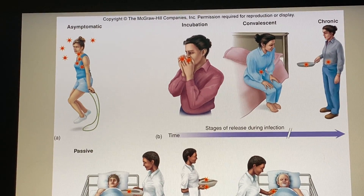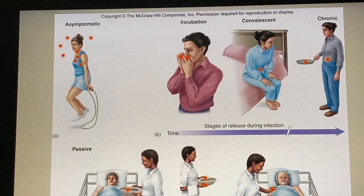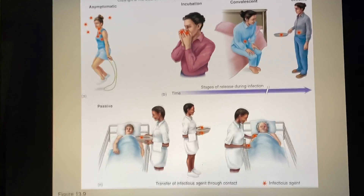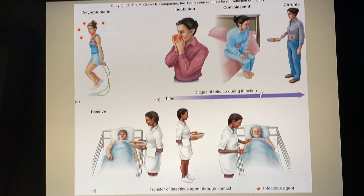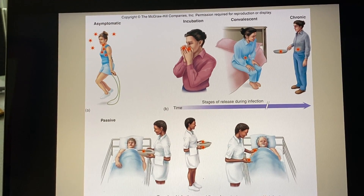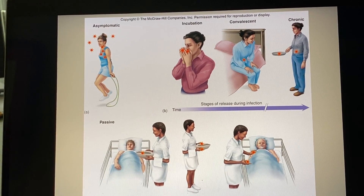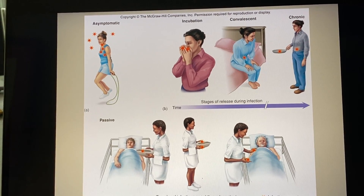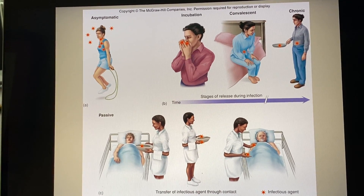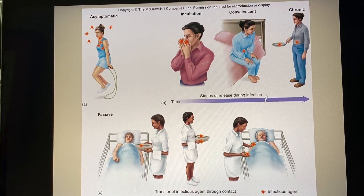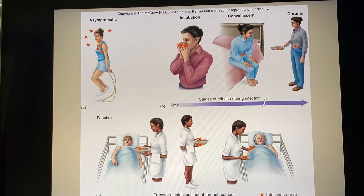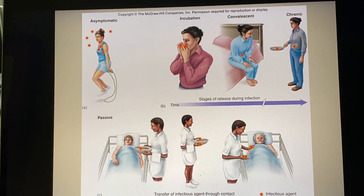A convalescent carrier is a person in a state of convalescence — the worst is over. For example, with a gastrointestinal virus causing vomiting and diarrhea, once in the convalescent phase, you're not vomiting anymore, but you're still not feeling 100%. You're past the really bad symptoms but still in the healing process, and you could potentially still be carrying that organism.